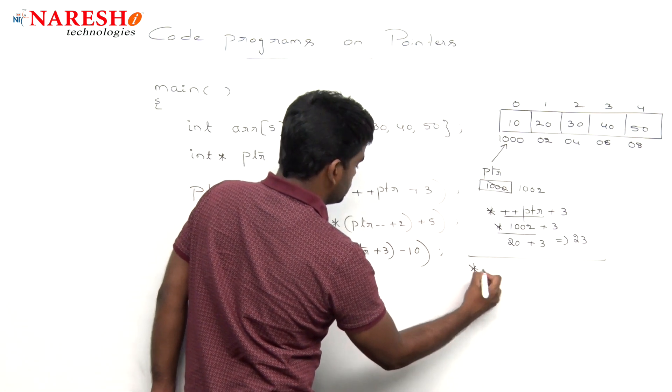And that next one, pointer PTR value. What is that PTR value now? Modified value is 1000. 1000 plus 3 minus 10. See, 1000 plus 3 means it is increased by 3. So plus 1 plus 2 plus 3. So this is what, 1006. 1006 minus 10. Pointer to 1006 once again, the value is 40. 40 minus 10 value is 30.